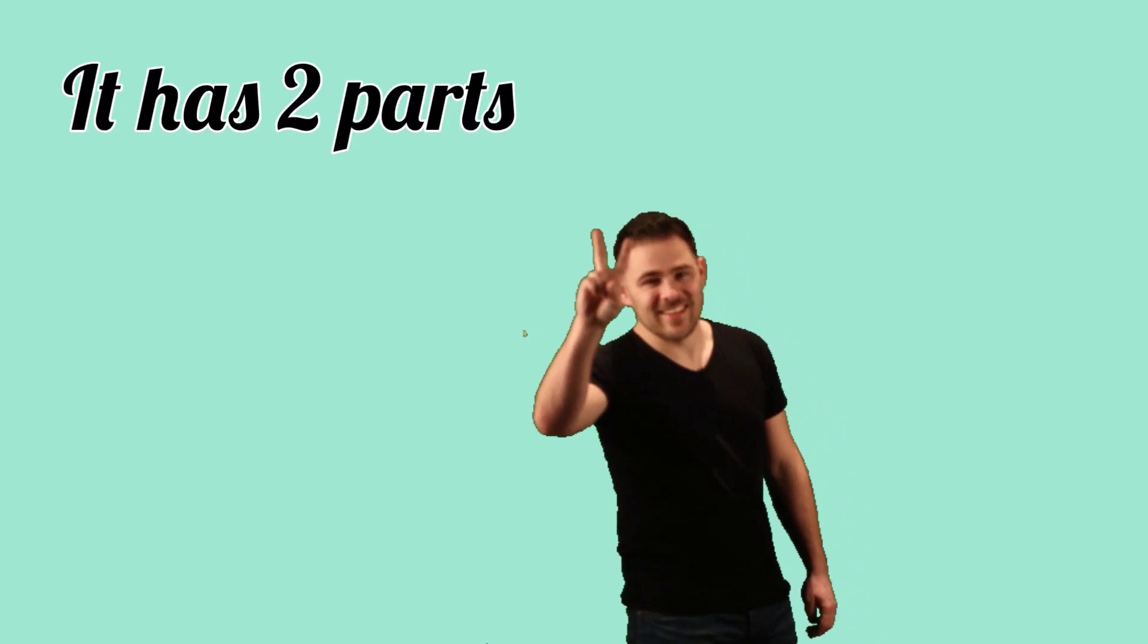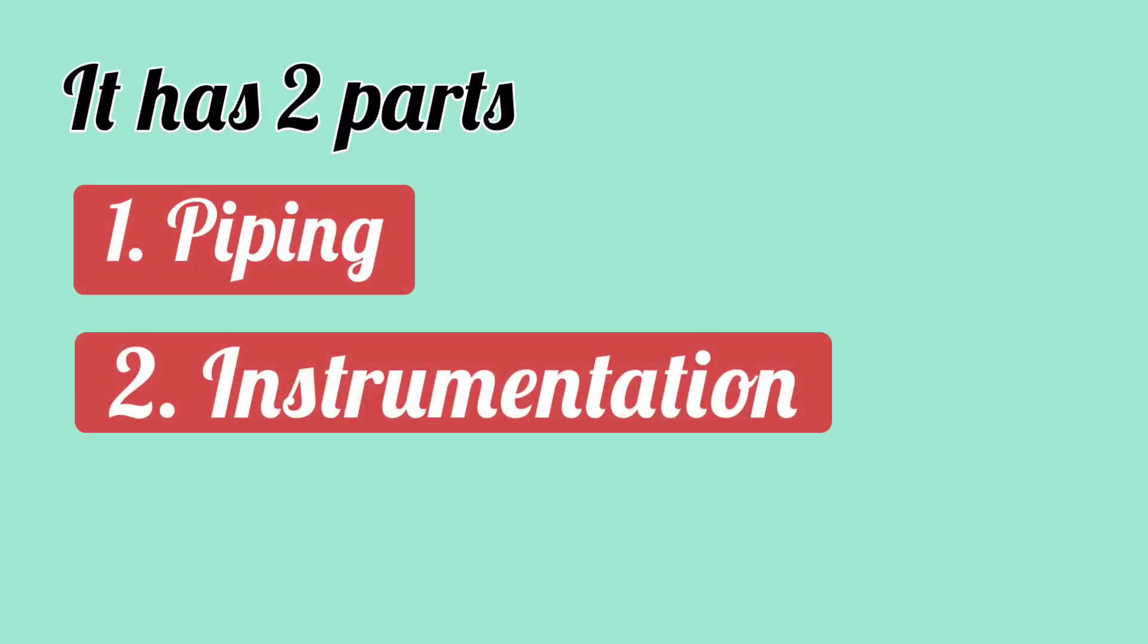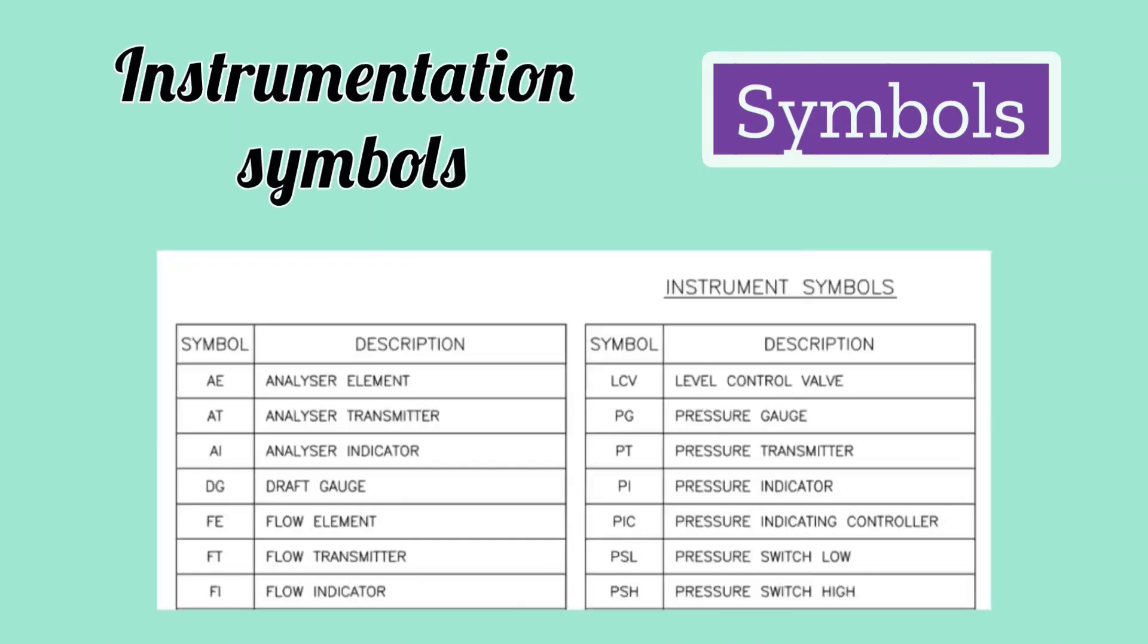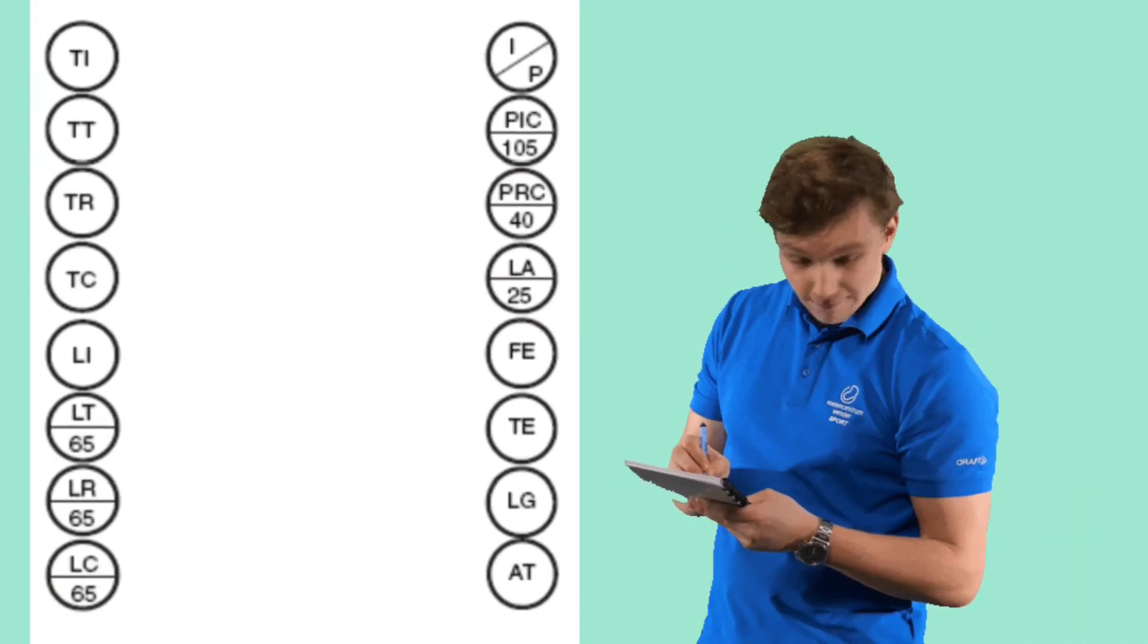It has two parts: first piping, and second instrumentation. Only two types of symbols are used in this: first, piping symbols, and other instrumentation symbols. To represent each instrument, symbols and circles are used.